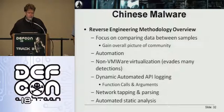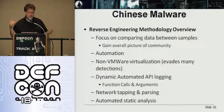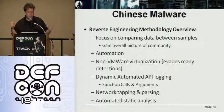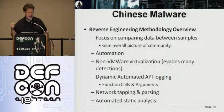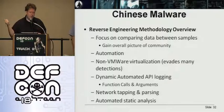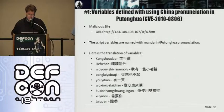We have dynamic automated API logging — we essentially log every function call when the malware is executed. This gives us what files are written to the system, deleted or modified, registry keys, network API calls, this sort of thing. We also tap the network outside the system and parse that looking for outgoing command and control call-home, as well as some automated static analysis.